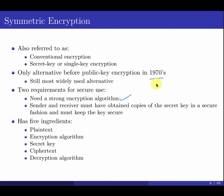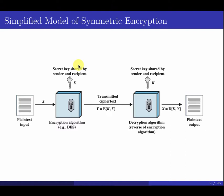Two requirements for secure symmetric encryption: first, a strong encryption algorithm — not something simple like taking the message, adding the key, and applying mod 26. Second, the sender and receiver must have access to the key, which must be kept secret — otherwise the system collapses. The components are: plaintext, ciphertext, encryption algorithm, decryption algorithm, and the secret key.